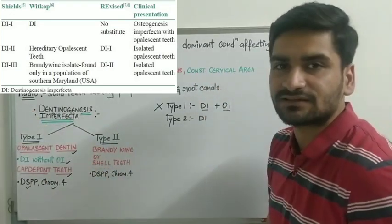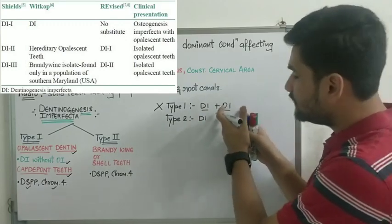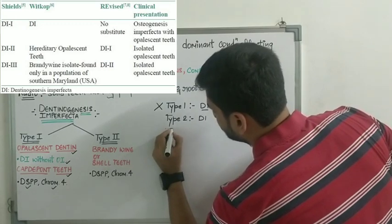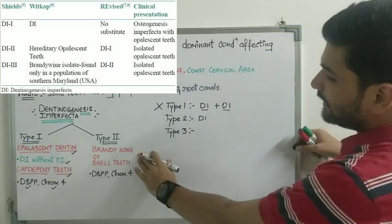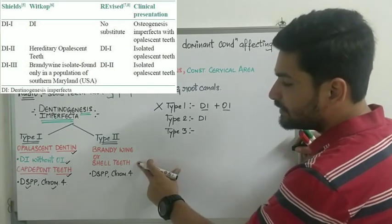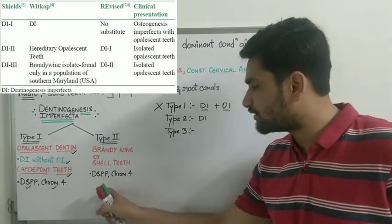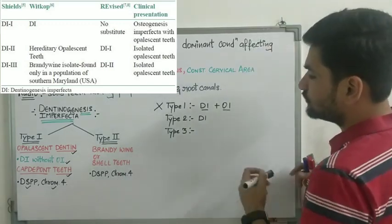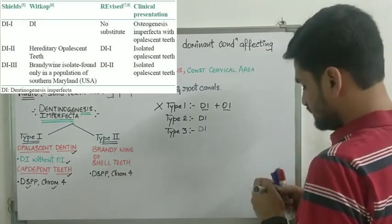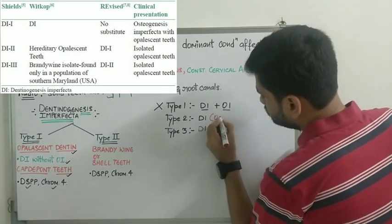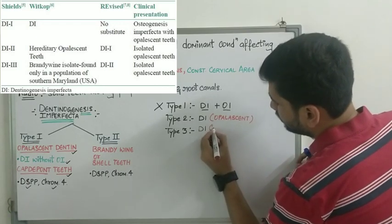Type 1 of the revised classification is type 2 of Shields classification - the first category (DI with osteogenesis imperfecta) is removed in the revised system. Type 3 of Shields classification - you can guess - is the Brandywine type, or shell teeth. The teeth are going to appear as a shell. In this type, the DSPP gene (dentin sialophosphoprotein gene) on chromosome number 4 is also affected. Shields type 3 becomes revised classification type 2, so I can write: type 1 is opalescent dentin and type 2 is Brandywine type.